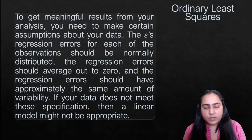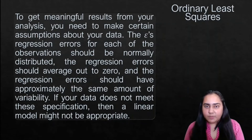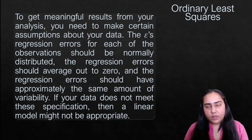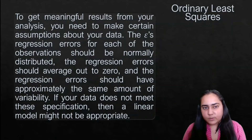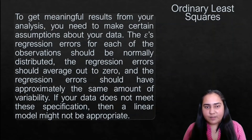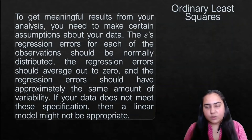If you wish to get meaningful results from your analysis, you need to make certain assumptions about your data. The epsilons — the noise or error that your regression line produces because your data points are not exactly falling on the line — should be normally distributed, should average out to zero, and should have approximately the same amount of variability. If your data does not meet all these specifications, then a linear model might not be an appropriate one and you might want to go for some other model like a curved line.